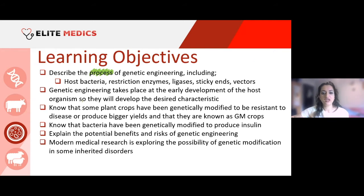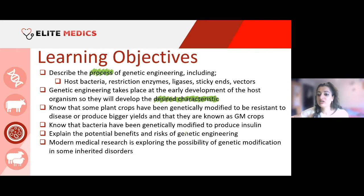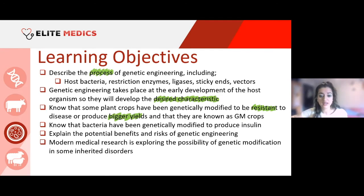Genetic engineering takes place at the early development of the host organism so that it will develop the desired characteristic. Some plant crops have been genetically modified to be resistant to disease or produce bigger yields. Bacteria has been genetically modified to produce insulin — a real-life example. We also need to discuss the potential benefits and risks, and how modern medical research is exploring genetic modification in some inherited disorders.